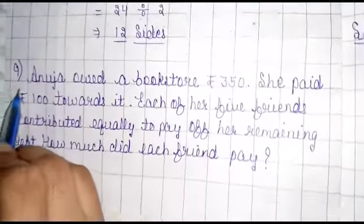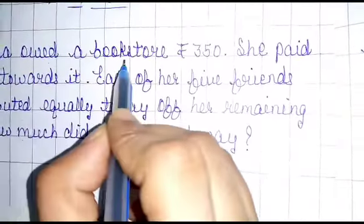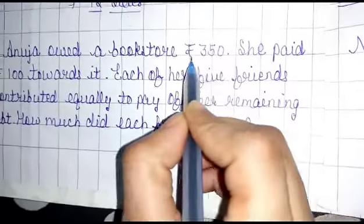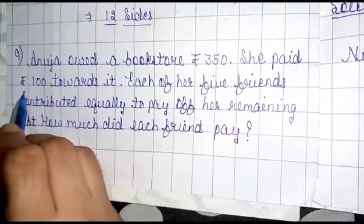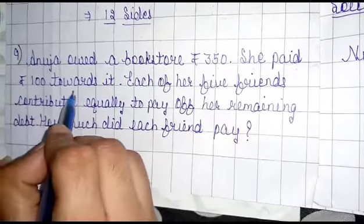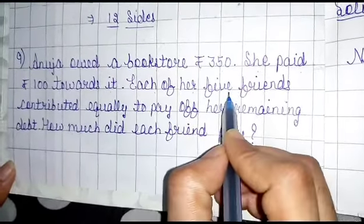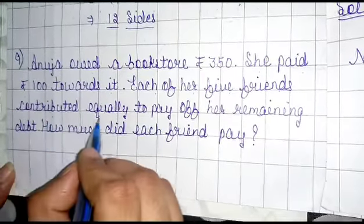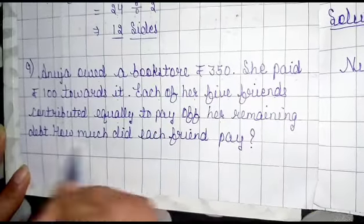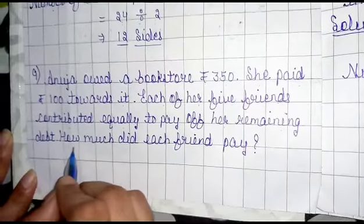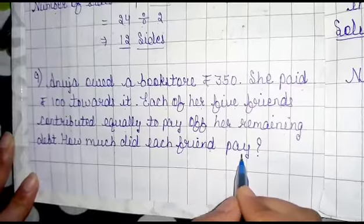Question number 9. Anuja owes a bookstore Rs. 350. She pays Rs. 100 towards it. Each of her 5 friends contribute equally to pay the remaining amount. How much did each friend pay?